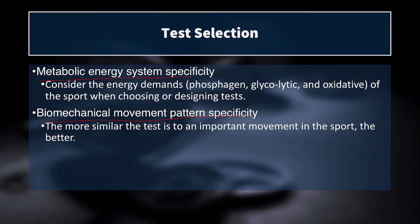We need to consider the energy demands — whether phosphagen, glycolytic, or oxidative — of the sport when designing our fitness tests. So if you have a group of soccer players, you might want them to do the yo-yo intermittent recovery test level one to test their aerobic capacity, or level two, which is faster right out of the gate, to test their anaerobic capacity.